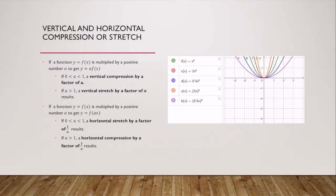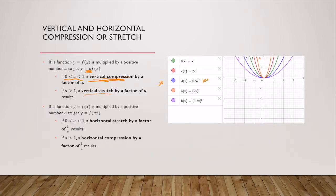Next we need to talk about vertical and horizontal compression or stretch. Remember that when we were looking at vertical shift, we were adding a constant to our function on the outside. We're going to have a vertical compression or vertical stretch if we take a constant a and multiply it by our function. A vertical compression by a factor of a is when you have a number between 0 and 1 — we're compressing the parent function f(x) = x² down towards the x-axis.